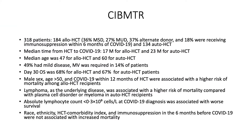CIBMTR reported their experience of 318 patients — 180 allo, 134 auto. Median time: 17 months for allo, 23 months for auto. Median age: 47 for allo, 64 for auto. Half had mild disease; the others had moderate to severe illness. Mechanical ventilation was needed by 14%. Overall survival: 68% for allo, 67% for auto — around a 33% death rate. Male sex, age, and COVID within 12 months of transplant had higher mortality rates. Lymphoma in auto transplant had more mortality, reflecting use of anti-CD20 and the resulting lymphodepletion. Absolute lymphocyte count less than 0.3 at COVID was associated with worst survival.